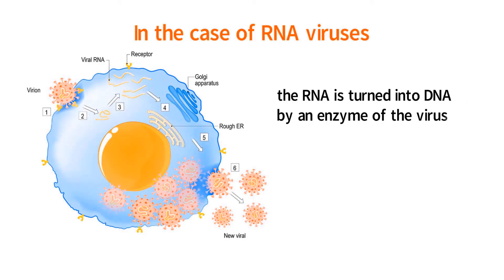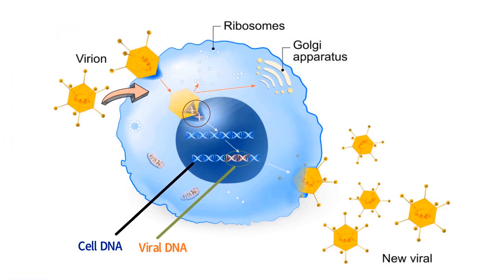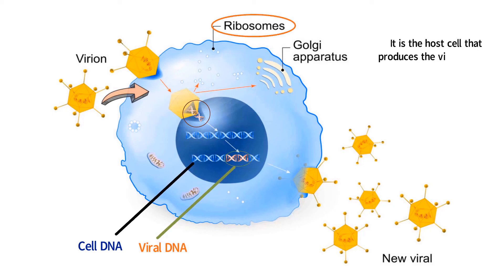In the case of RNA viruses, the RNA is turned into DNA by an enzyme of the virus known as reverse transcriptase. After this step, the newly synthesized DNA integrates with the host cell DNA, just as is the case with DNA viruses. When the viral DNA has integrated with the host cell DNA, it is now possible for the genes from the virus to be expressed. Since viruses don't contain all the necessary components to produce proteins — such as ribosomes and a large supply of amino acids — it is the host cell that produces the viral proteins.